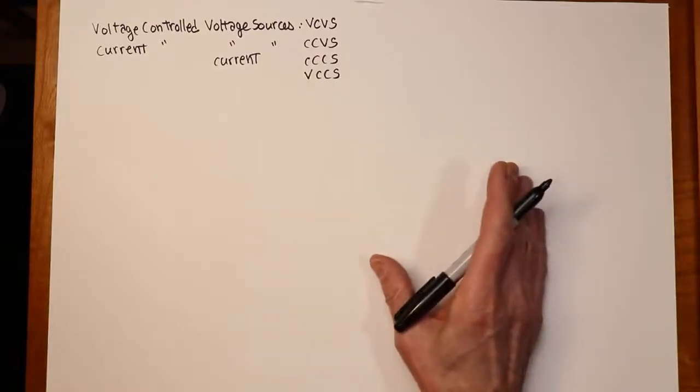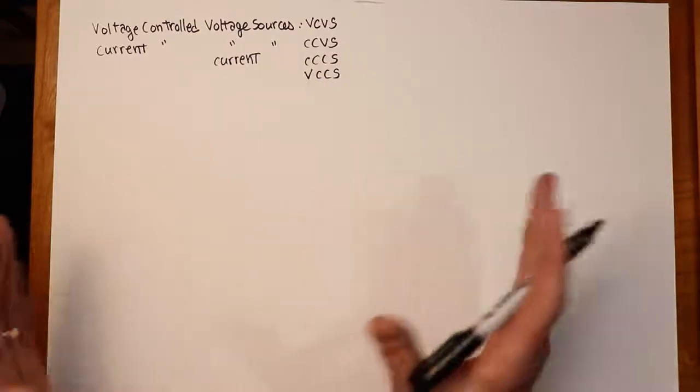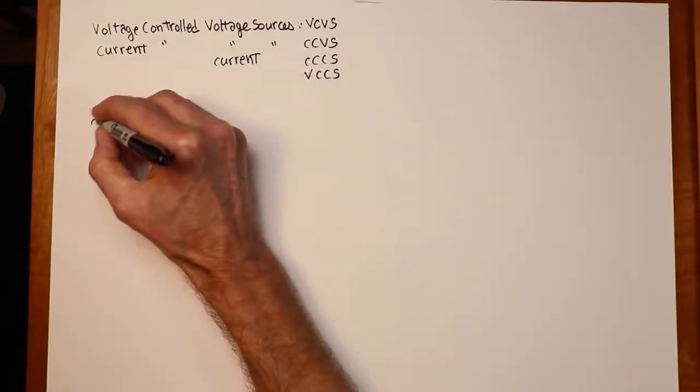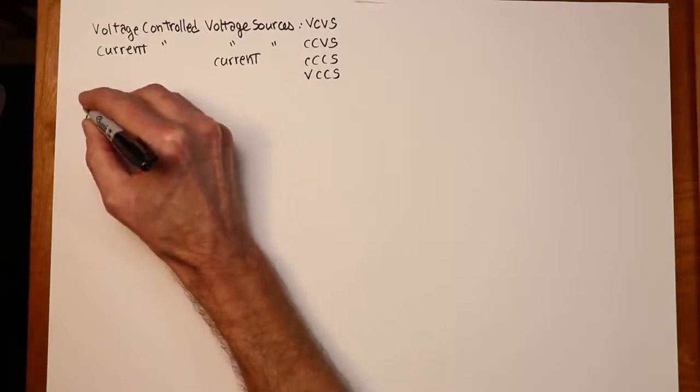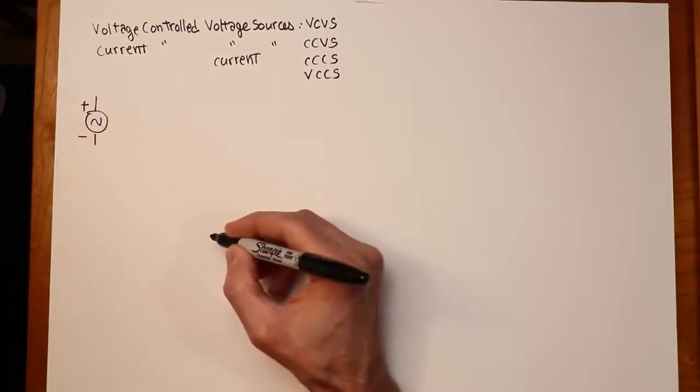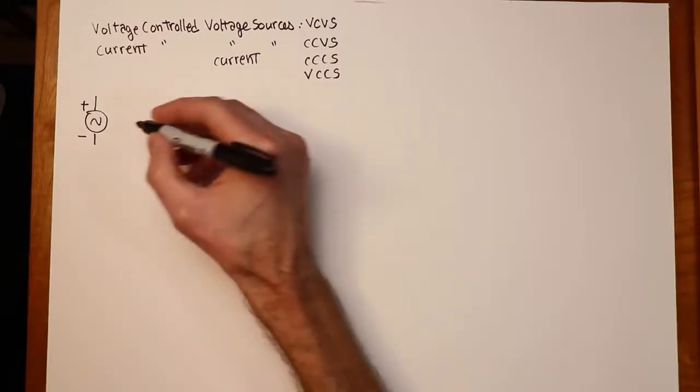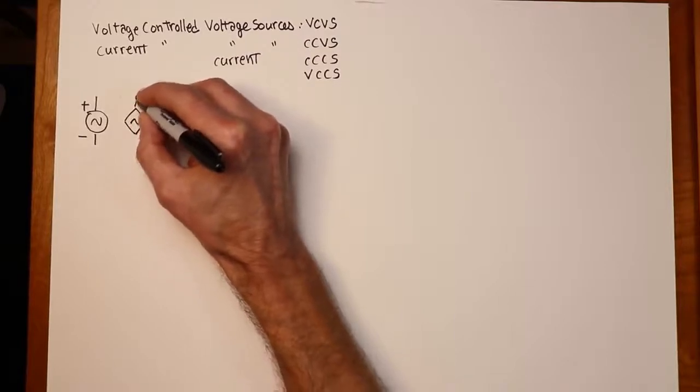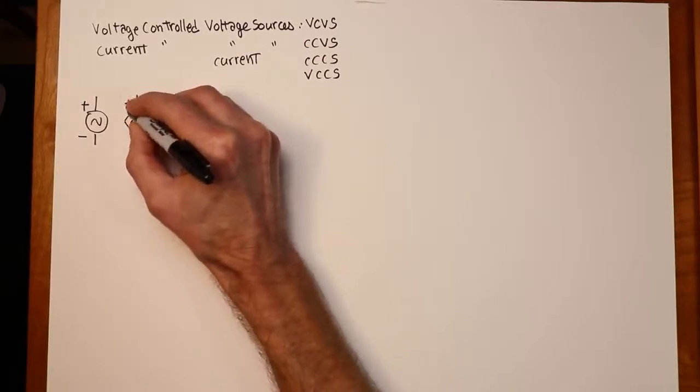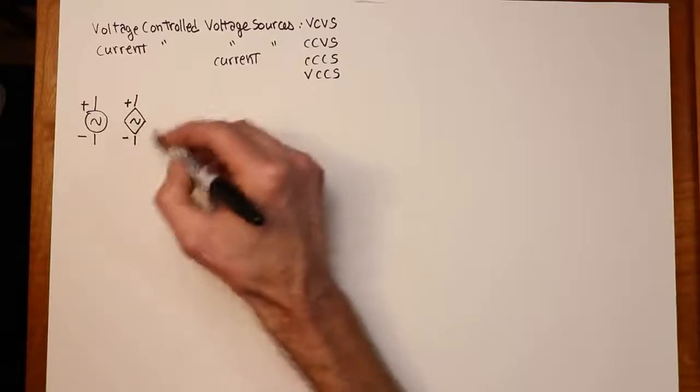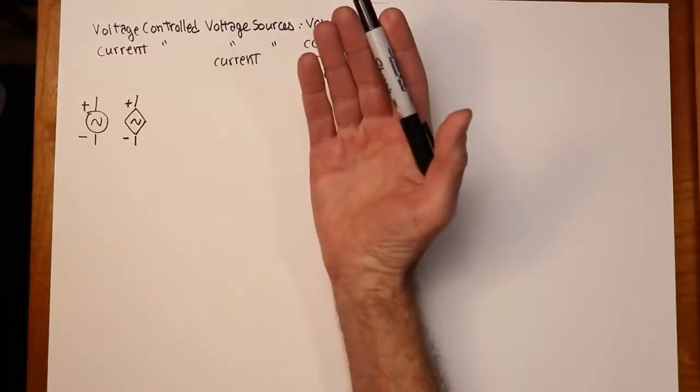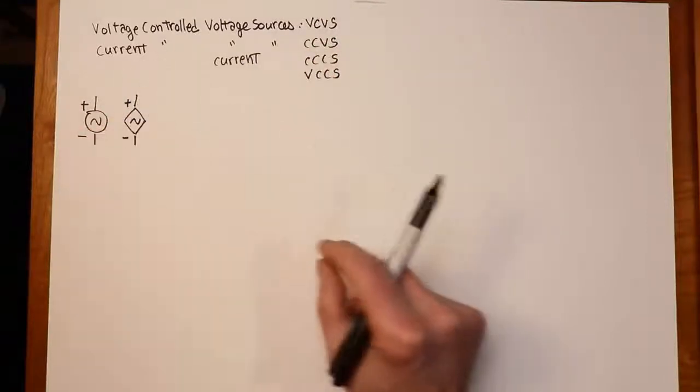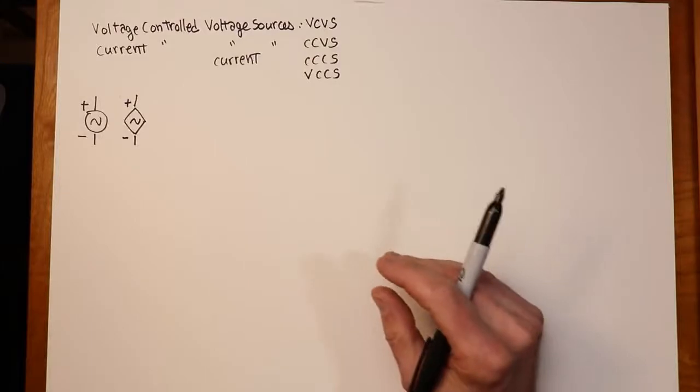Now on a schematic, these are drawn typically with a diamond shape. So whereas an AC voltage source would look something like this, usually for the controlled sources they're drawn with a diamond. So you would see something like this. Still have a reference polarity. This is not a hard and fast rule. Plenty of times, especially in electronics texts, you can find controlled sources that use the round form instead of the triangular diamond shape.